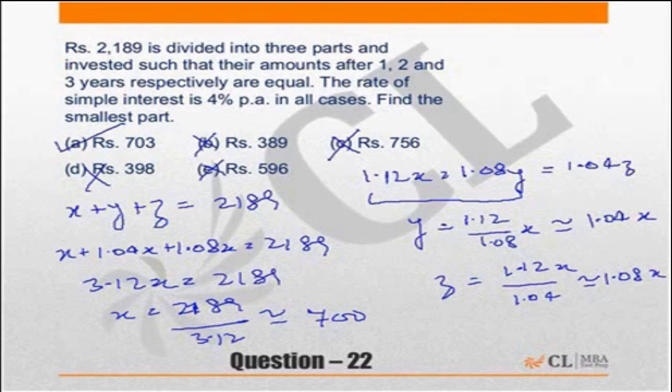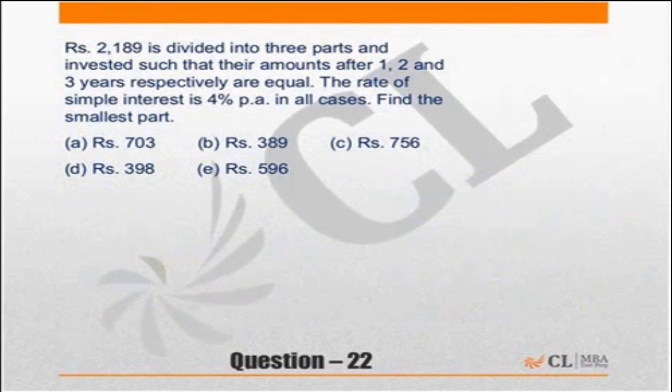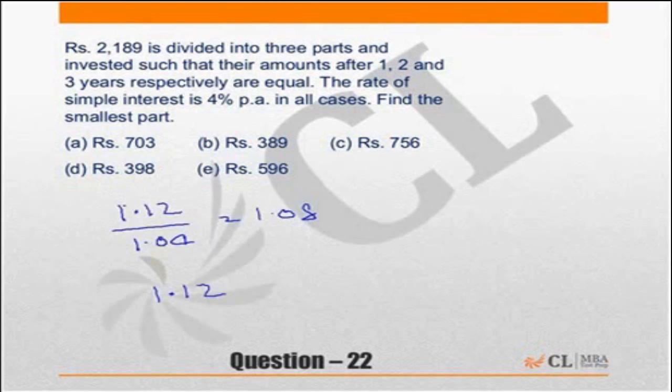So the key thing out here was the approximation which I did. Just to make your understanding easier again, I have approximated 1.12 upon 1.04 to be equal to 1.08. And I have approximated 1.12 upon 1.08 to be equal to 1.04. Now this will be an approximation which helps me solve the question.